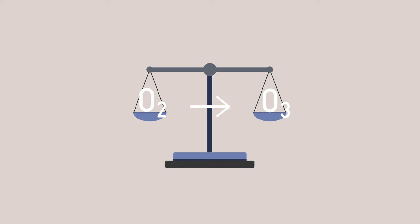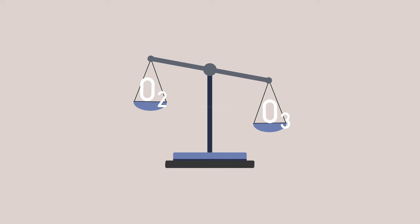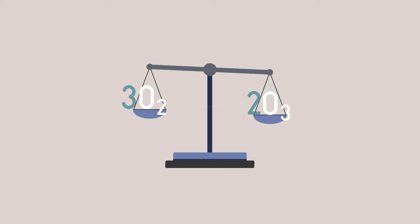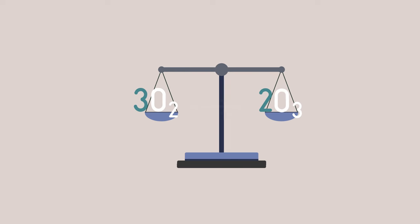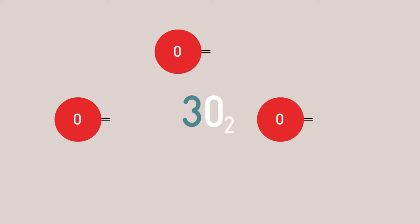Often when you write out chemical reactions, the atoms do not balance straight away. You need to balance the equations to conserve atoms. You do this by putting numbers in front.